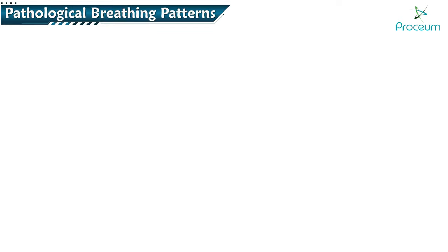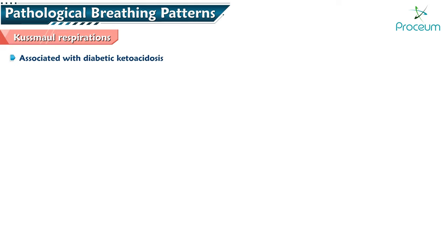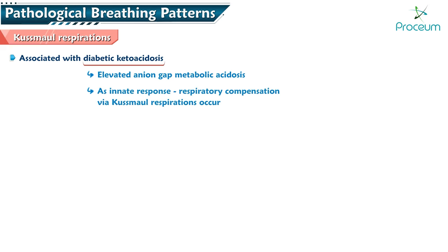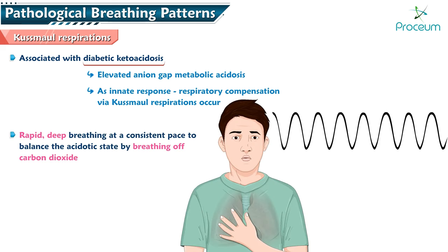Pathological Breathing Patterns: Kussmaul Respirations. Kussmaul respirations are associated with diabetic ketoacidosis. In diabetic ketoacidosis, the body is in a state of elevated anion gap metabolic acidosis. As an innate response, respiratory compensation via Kussmaul respirations occurs in these patients. Kussmaul respirations consist of rapid, deep breathing at a consistent pace that attempts to balance the acidotic state by breathing off carbon dioxide.